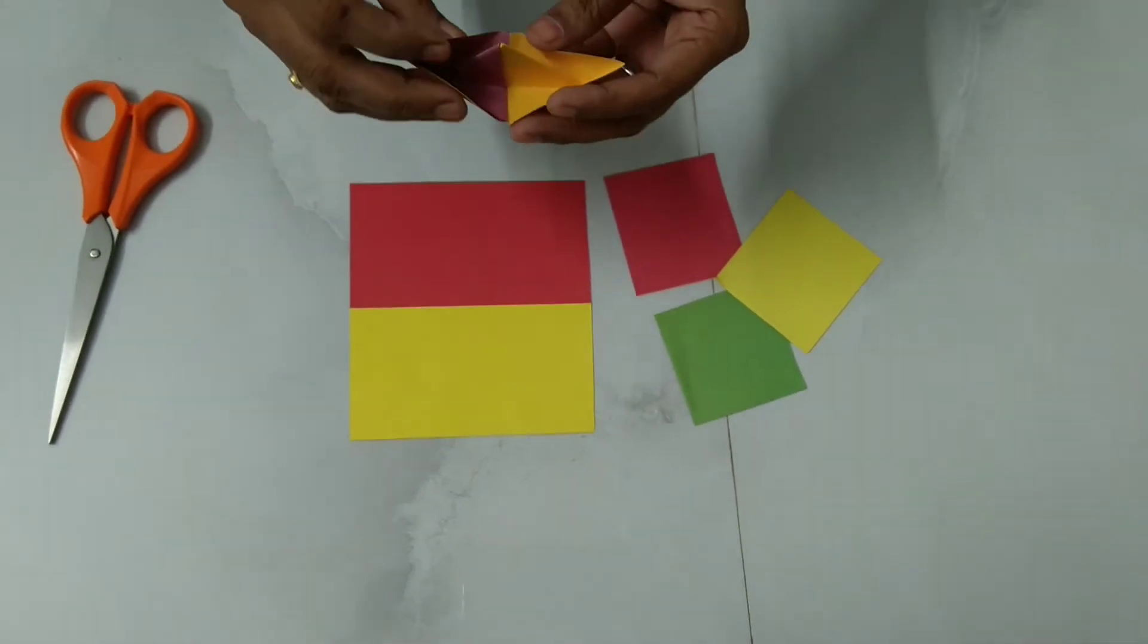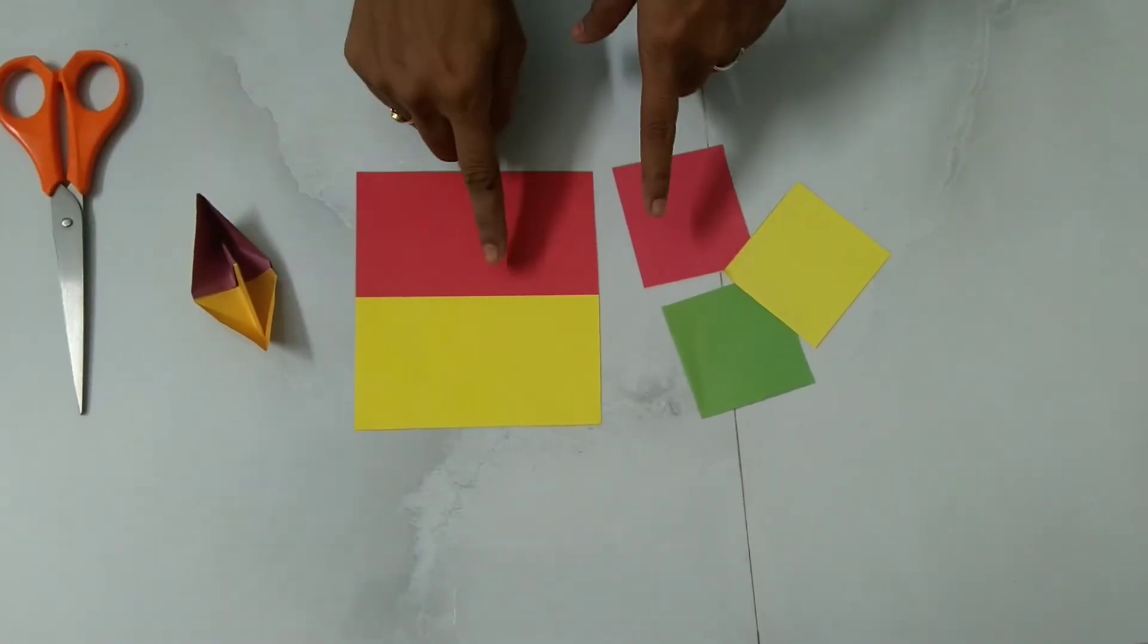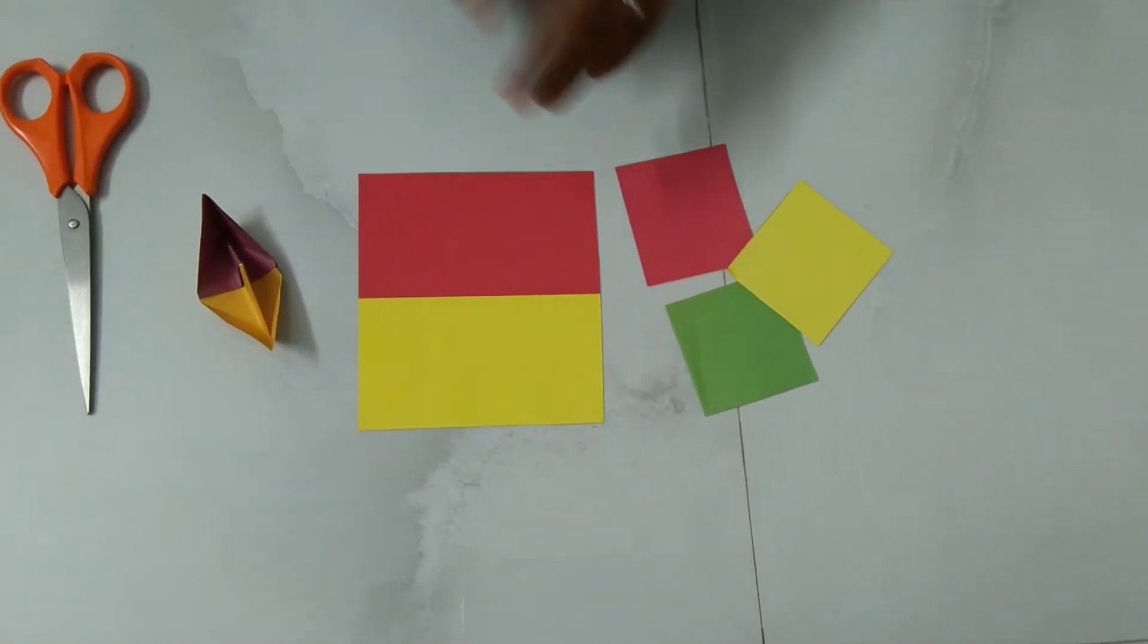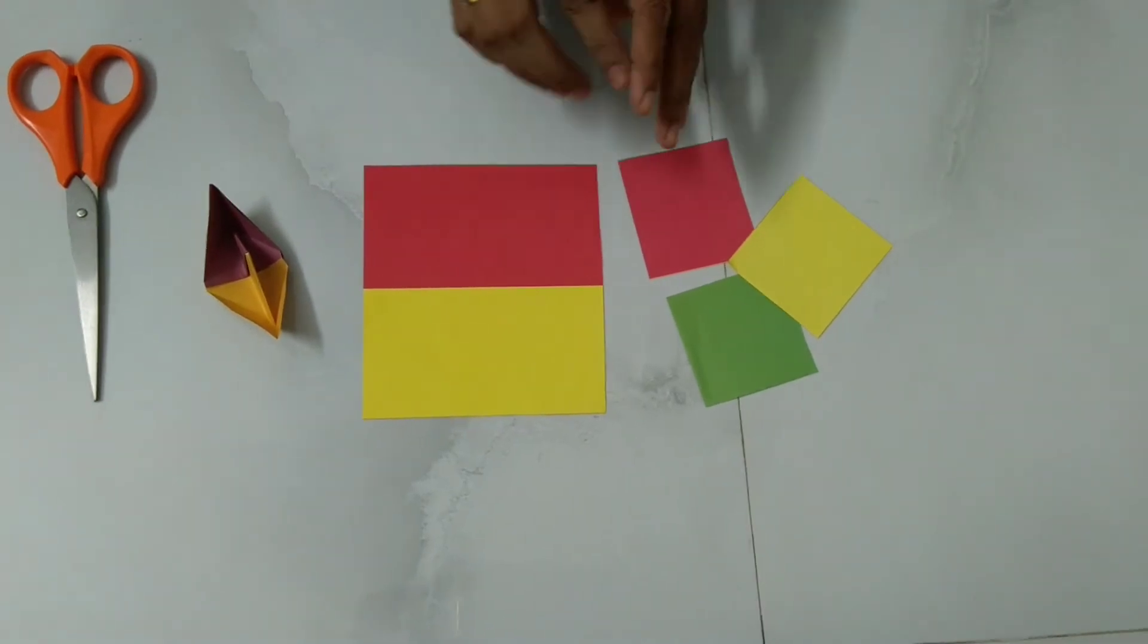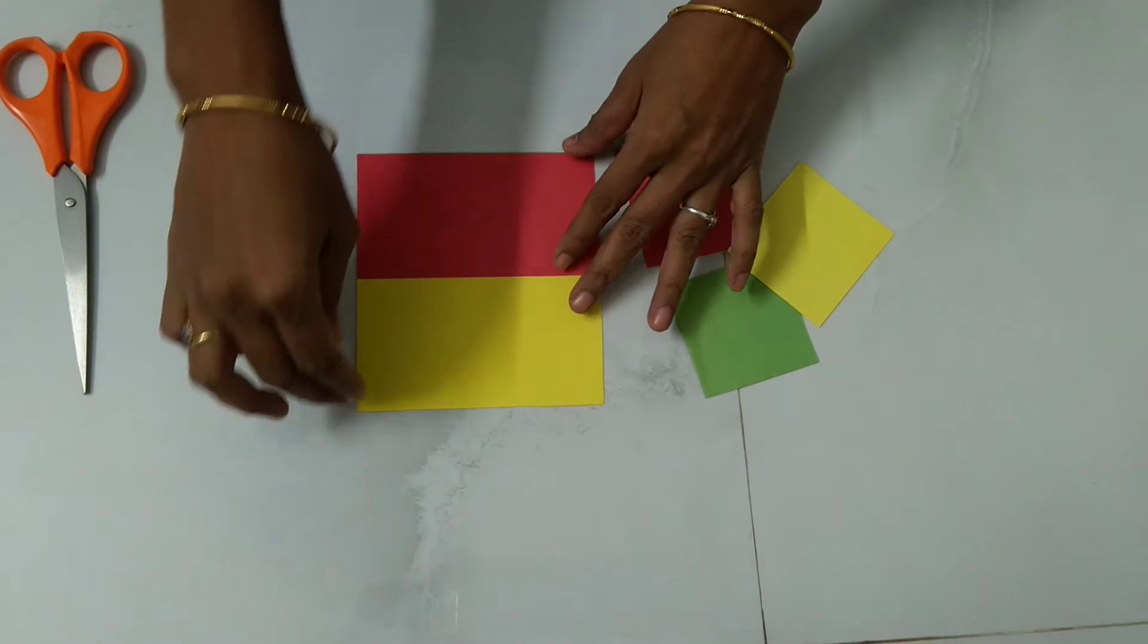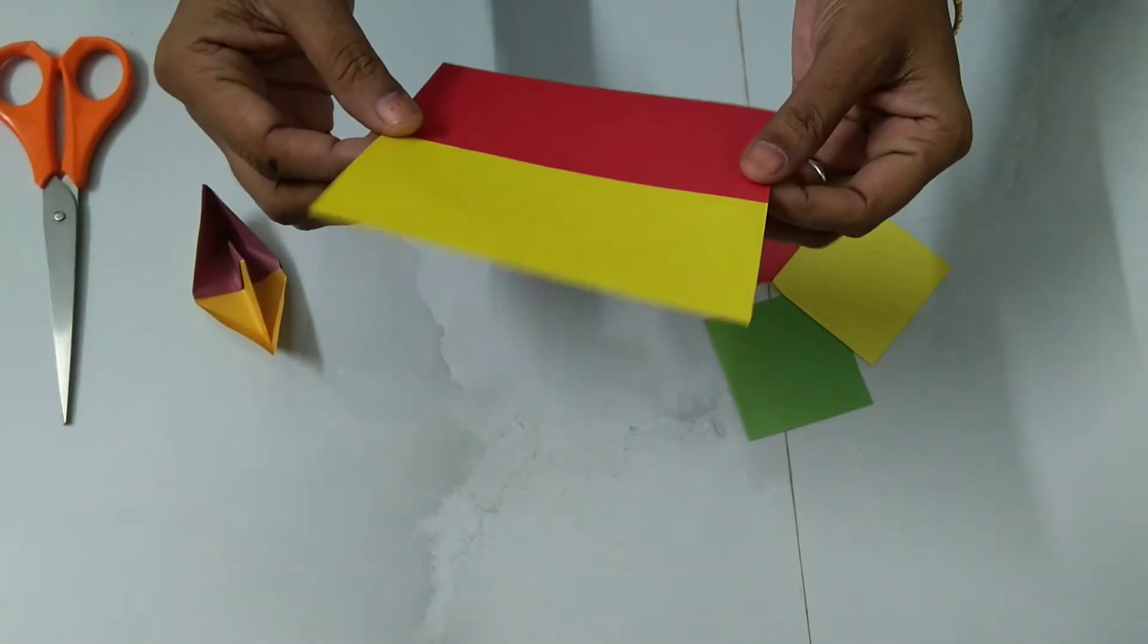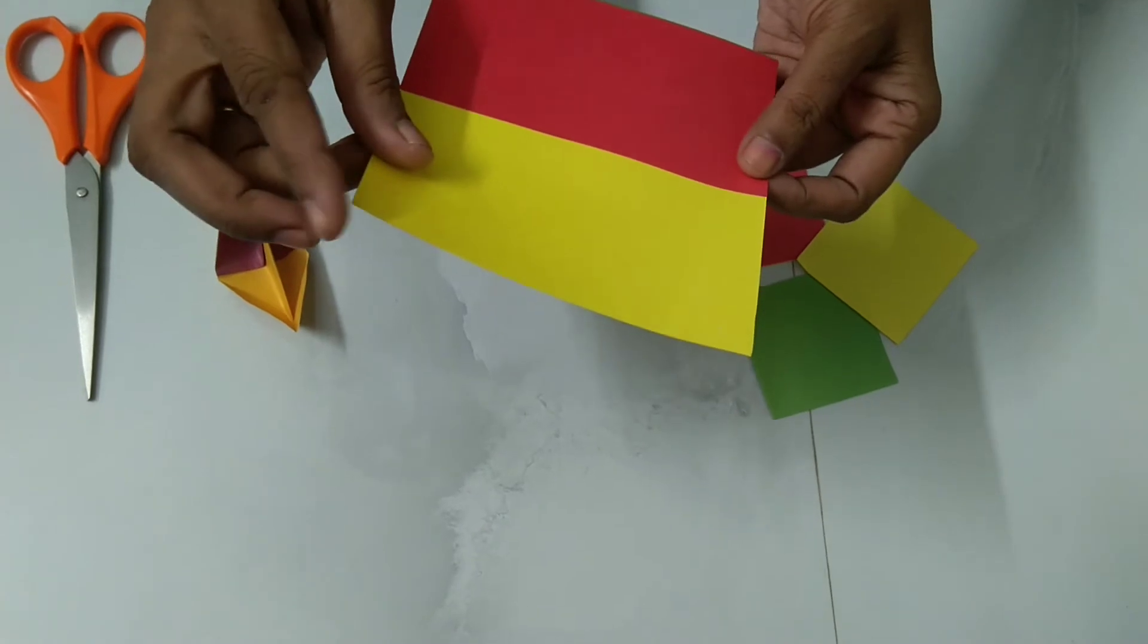For this we need a scissor to cut the paper, colorful papers as per your own choice. First of all, we should check whether the paper which we have taken is in a proper square shape or not. If it is not in a proper square shape, we can make it square.